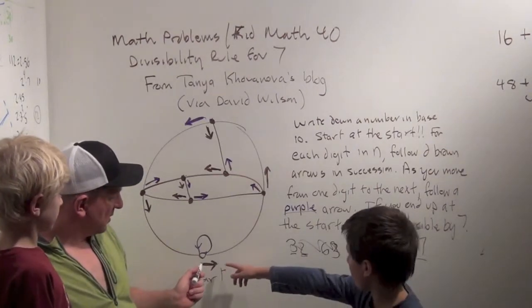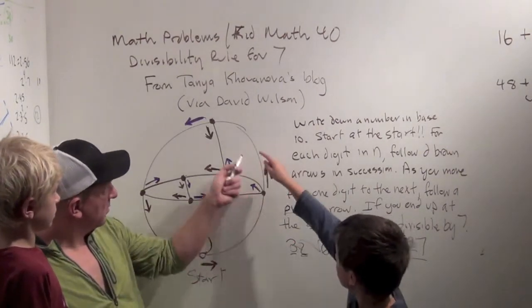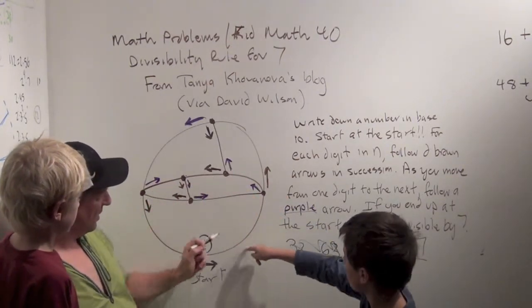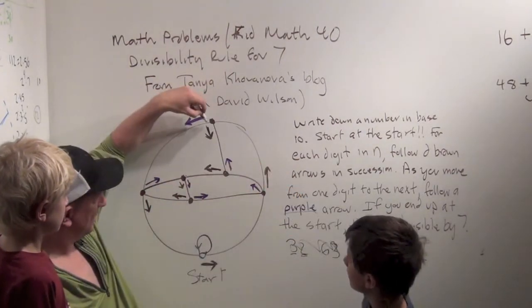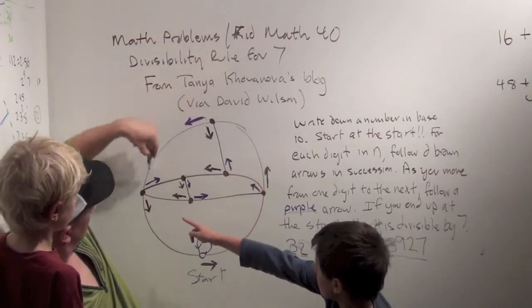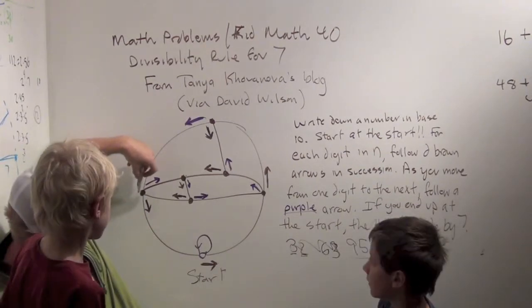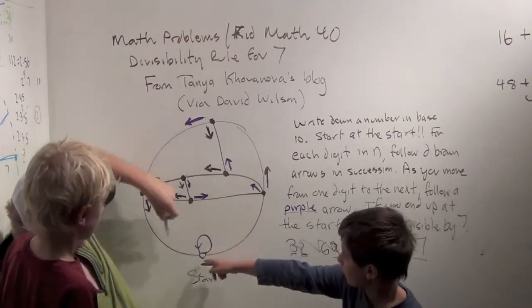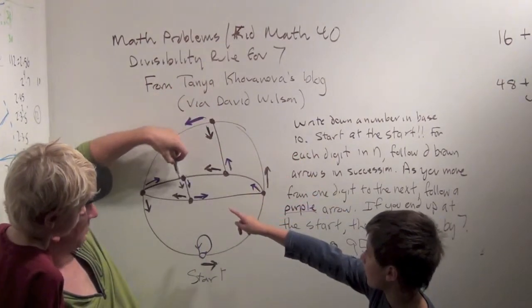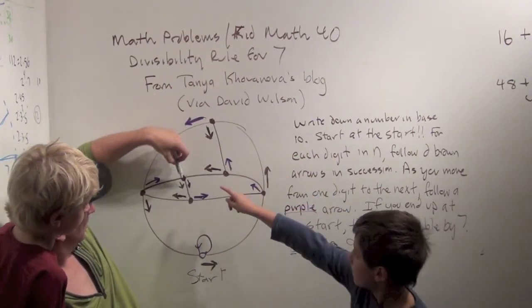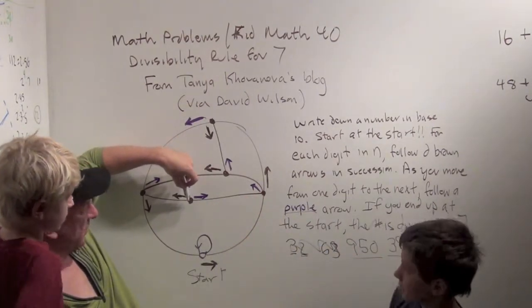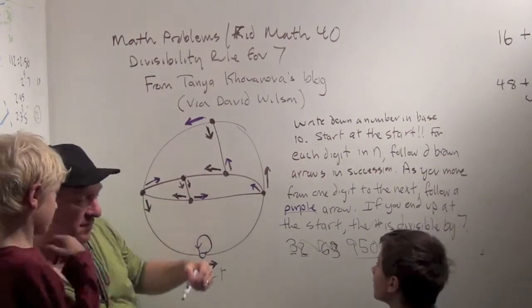Alright. So, we follow nine browns. One, two, three, four, five, six, seven, eight, nine. So, we're up here. Now you have to follow one purple arrow. Down. Okay, now five brown arrows. One, two, three, four, five. Now, follow a purple arrow. Down. And, now we're at zero, so. Not divisible. Not divisible by seven. No. Okay?